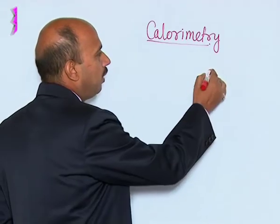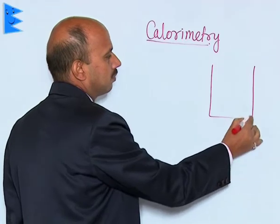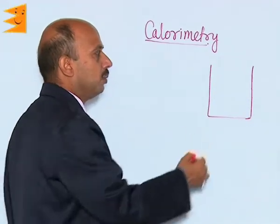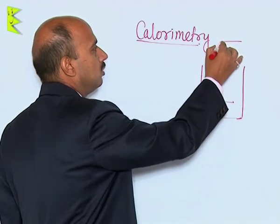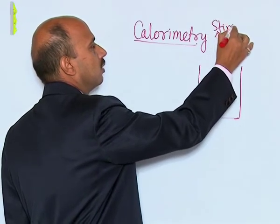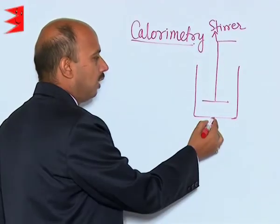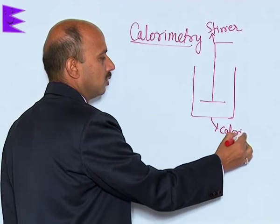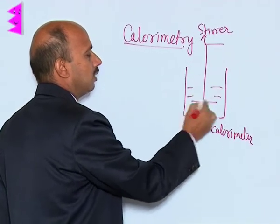Here, this is a calorimeter, which is basically made of copper. A stirrer is used — this is called a stirrer, this is called a calorimeter — and some water is filled here.